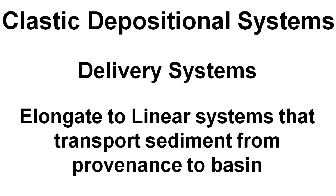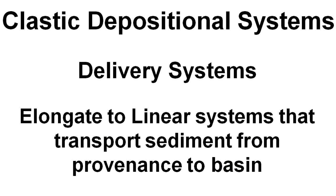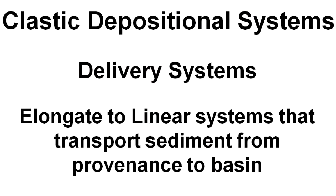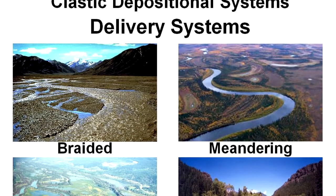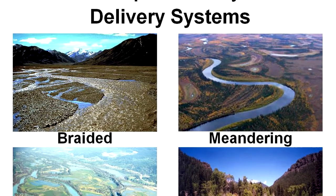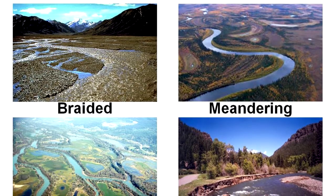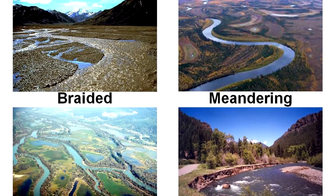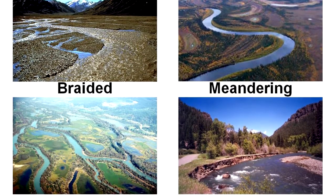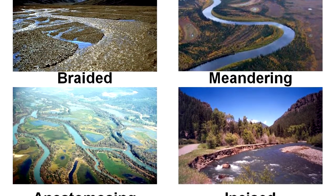So we'll look first at delivery systems. These are elongated to linear systems that transport sediment from provenance to basin. And there are four types of delivery systems: braided rivers, meandering rivers, anastomosing rivers, and incised valleys.